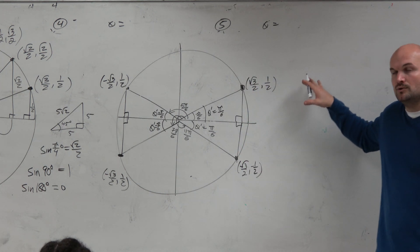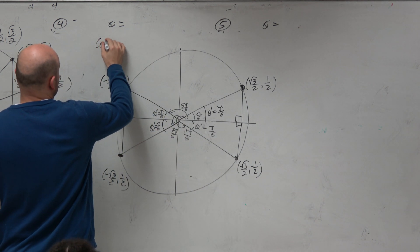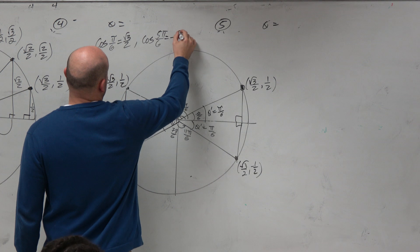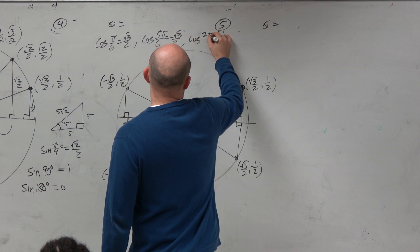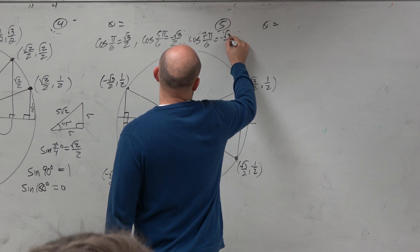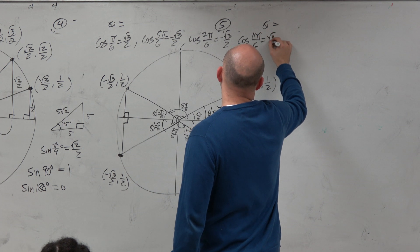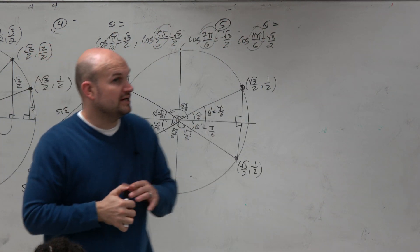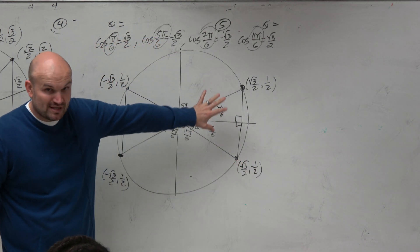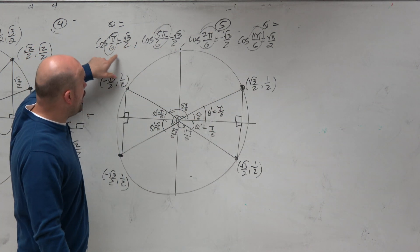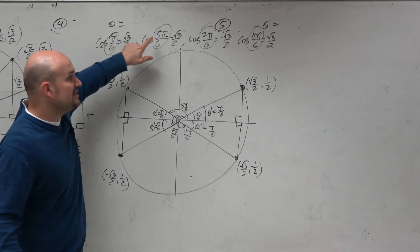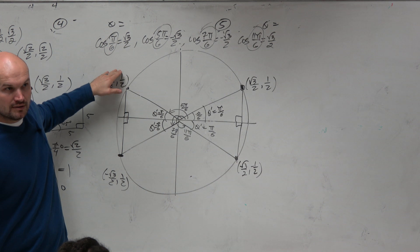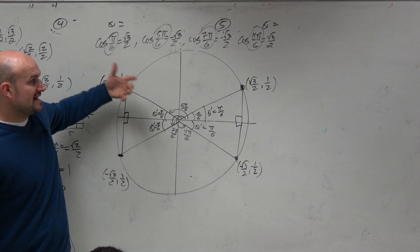What's important here: cosine of pi over 6 equals square root of 3 over 2. Cosine of 5 pi over 6 equals negative square root of 3 over 2. Cosine of 7 pi over 6 equals negative square root of 3 over 2. And cosine of 11 pi over 6 equals square root of 3 over 2. All four angles have the same reference angle, so once you identify the reference angle you know the coordinate point. The only difference is which quadrant each angle lies in — that determines the positive or negative nature of the value. Does that make sense? So that's basically what we're going to be doing.